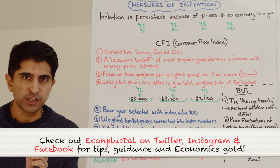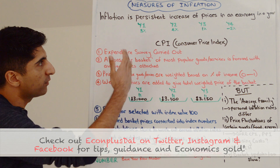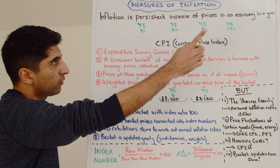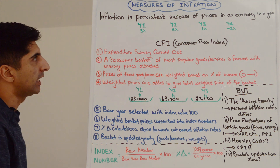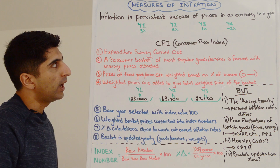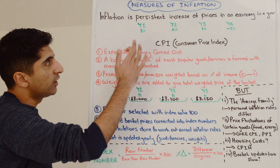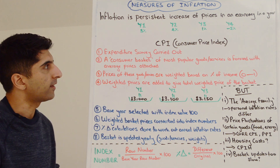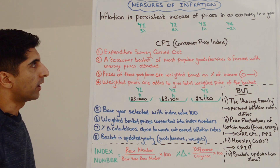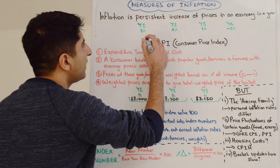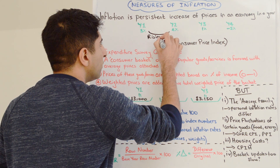Let's understand some terminology when it comes to inflation. I've given four inflation rates for four different years: year one, year two, year three, and year four. In year two, inflation is four percent, meaning prices are rising by four percent, whereas in year one they were only rising by three percent. So prices are rising faster in year two than in year one — we call that simply rising inflation.